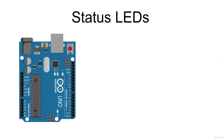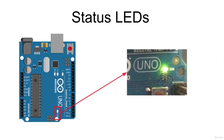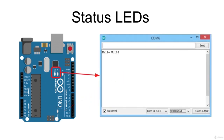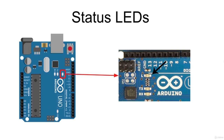On the board there are 4 status LEDs that give specific information to the user. The power LED indicator lights up when you plug your Arduino into a power source to indicate that the board is powered correctly. If this light does not turn on, there is something wrong with the power connection. The TX and RX LEDs blink each time data is transmitted or received during serial communication. Finally, the board has a general-purpose green LED that can be used by your code, connected to digital pin number 13.